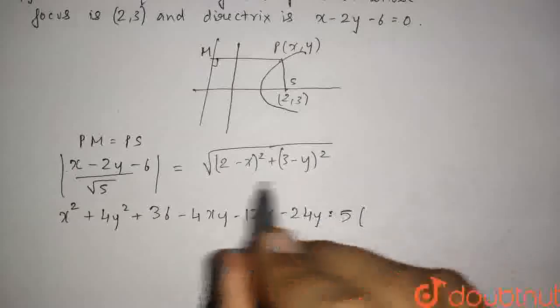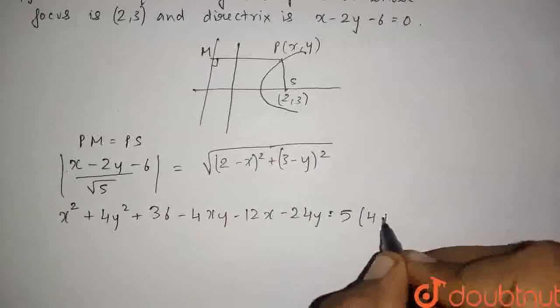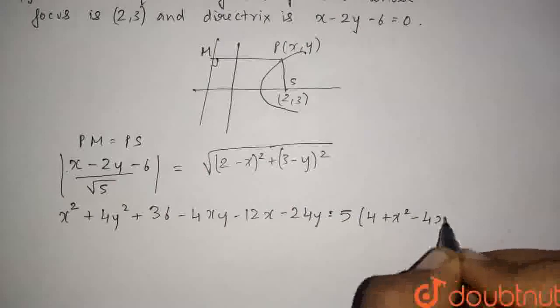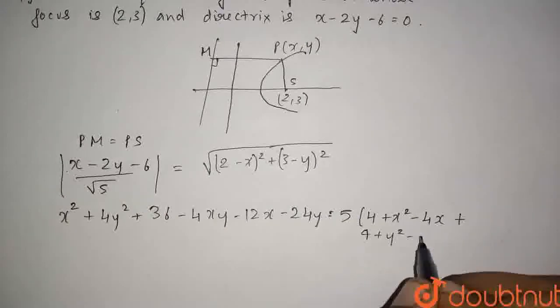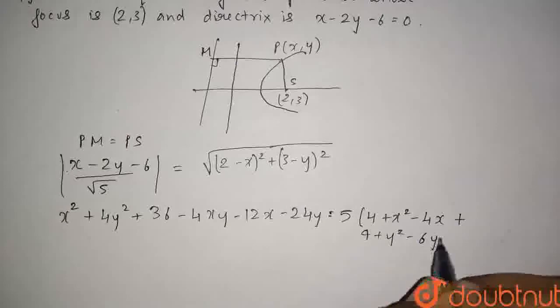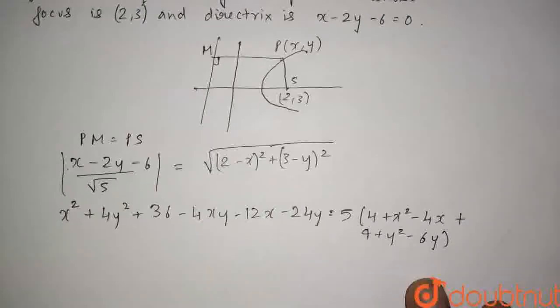Therefore, we will open this bracket. So, 4 + x² - 4x + 9 + y² - 6y. This is the equation.